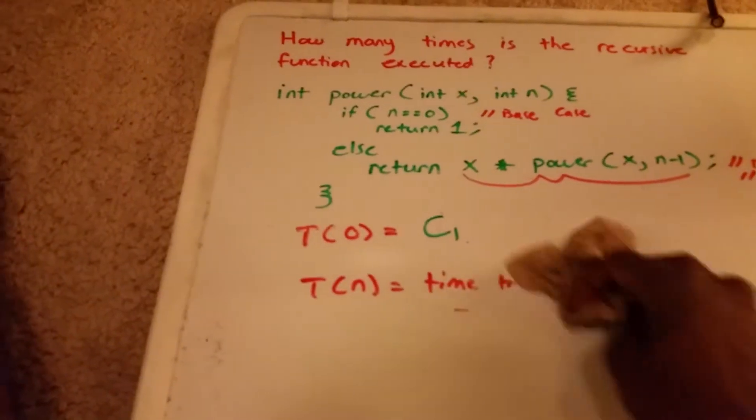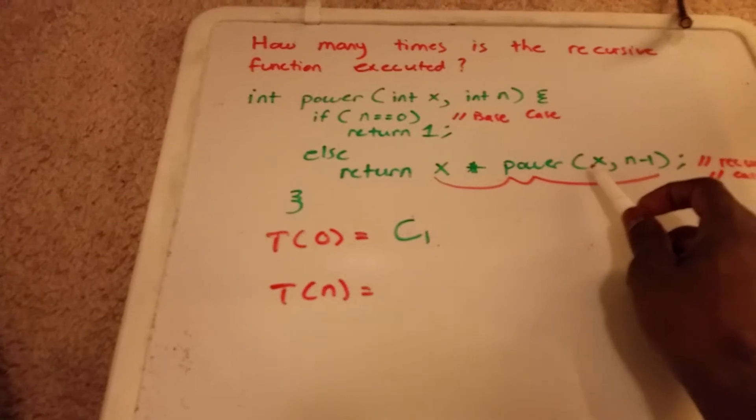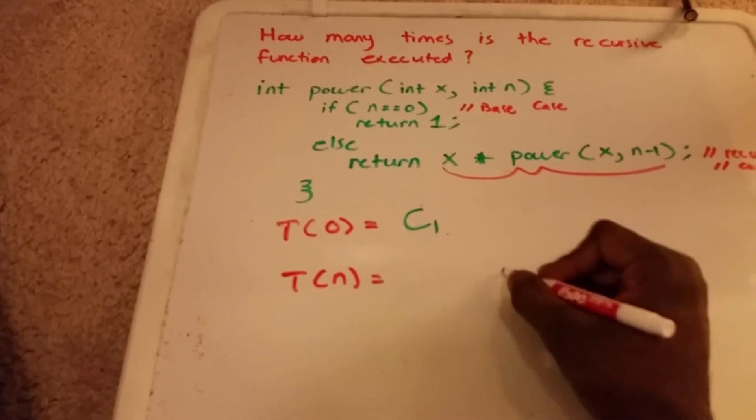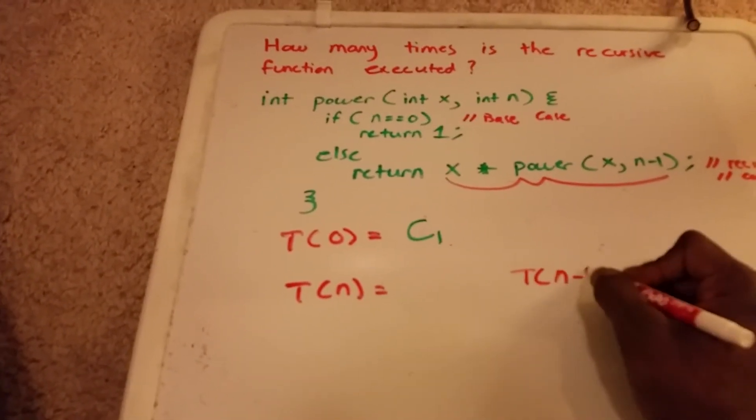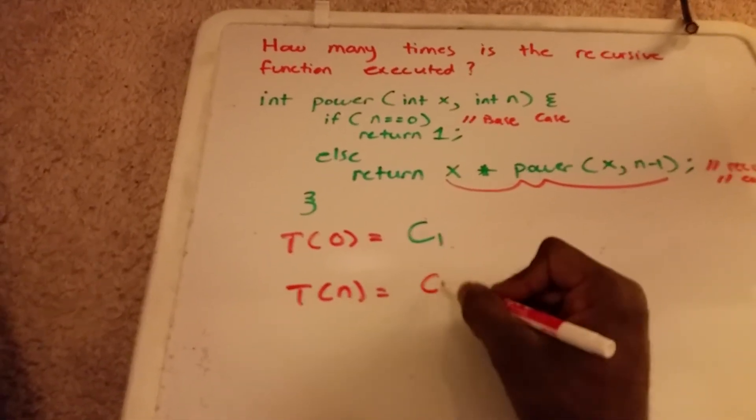So the time that it takes to be solved here is T(n-1). And the time to solve x takes a constant amount of time. We'll call it c2.